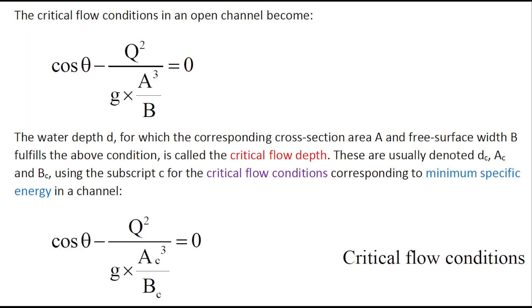Then, we obtain this critical flow condition as cosθ - Q²/(g×A³/B) = 0. The water depth d, for which the corresponding cross-section area A and free surface width B fulfills the above condition, is called the critical flow depth.